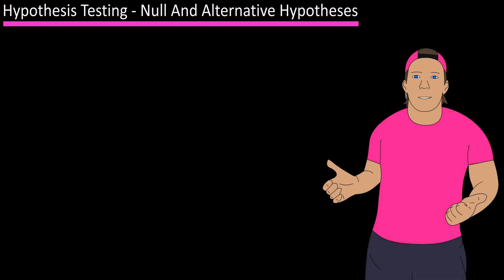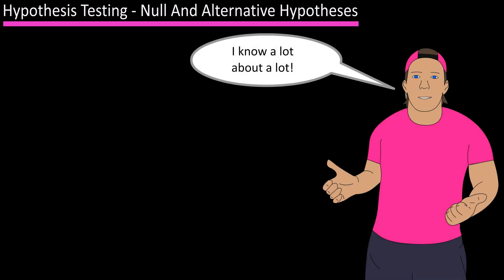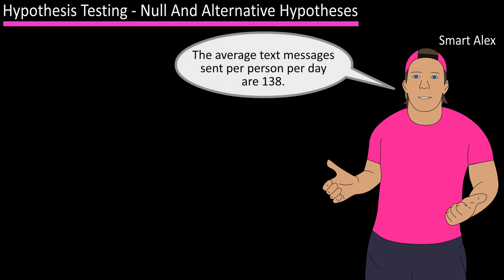Let's say you have a friend like we all do that is an absolute know-it-all. We will call him Smart Alex and he makes a statement. He says that a person's average text messages sent per day are 138. You think that this is not true and you want to prove that this dude is wrong.